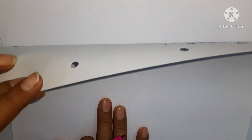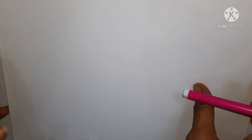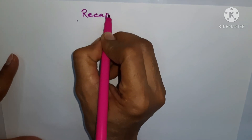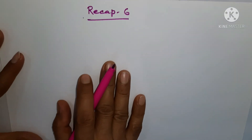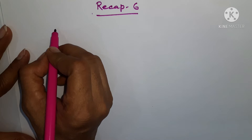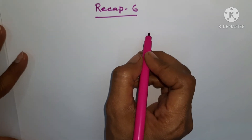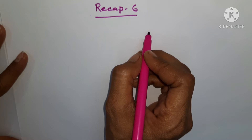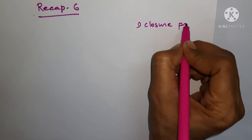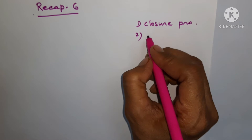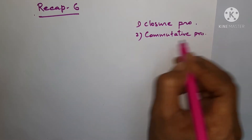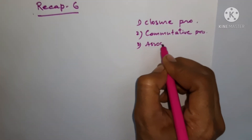Hello friends, here we are again back with our next recap — recap number six. In this recap we are going to study the fourth property. We are undergoing properties of whole numbers. Till now we have done three properties: the very first is the closure property, the second is the commutative property, and the third is the associative property.